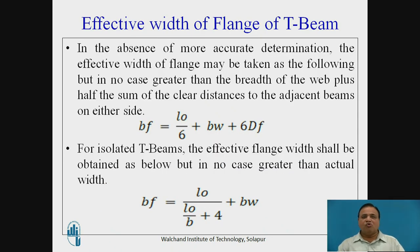So in the absence of more accurate determination, the effective width of flange may be taken as the following. But in no case greater than the breadth of the web plus half the sum of the clear distances to the adjacent beams on either side. So BF that is breadth of flange is equal to L0 by 6 plus BW plus 6DF.